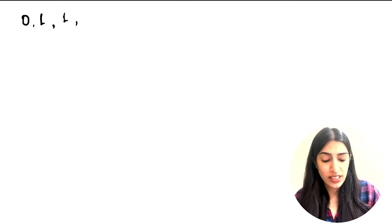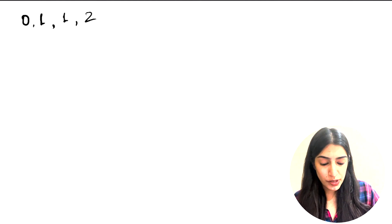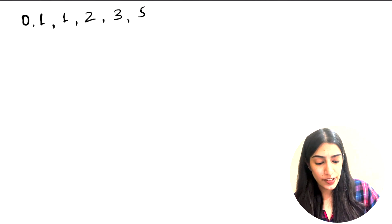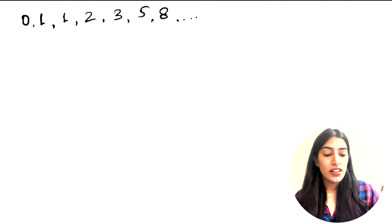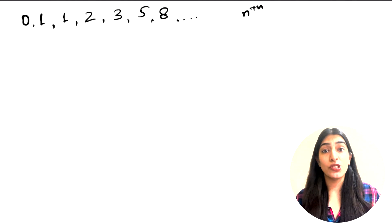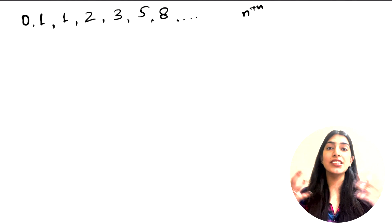Let's start with what is the Fibonacci series. We are given two numbers initially: zero and one, and the rest of the numbers are calculated by adding the previous two numbers. So the next number is zero plus one which is one, then one plus one which is two, then one plus two which is three, then two plus three which is five, then eight, and so on. We have to find the nth Fibonacci number.